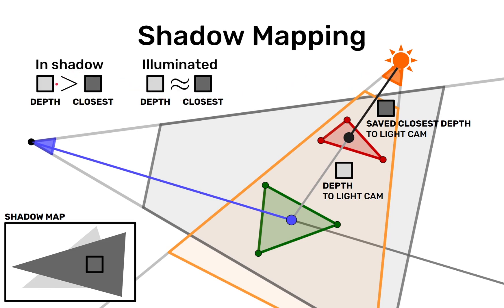If the depth of our current fragment is larger than the closest value stored then we are in shadow because there is something on the way to the light source. There is a closer object with a closer depth to the light source along that path. So our current fragment must be in shadow.